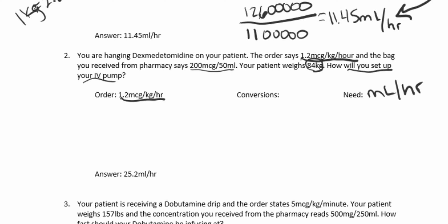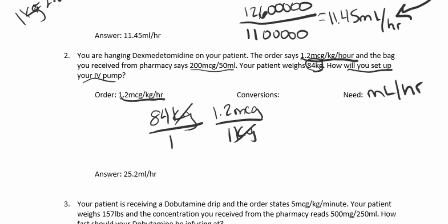We need to know what conversions we have. We have kilograms and kilograms, so we don't need a kilograms-to-pounds conversion. We also have micrograms and micrograms, so we don't need microgram conversions either. Let's start with our weight: 84 kilograms over one. We have 1.2 micrograms per one kilogram, so we can cross off our kilograms. Then we have 50 mL per 200 micrograms, which crosses off our micrograms.